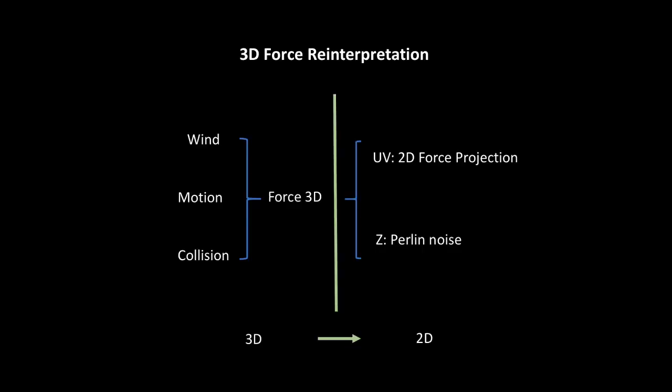We also have a system to reinterpret any 3D forces, whether coming from wind, motion, or collision, and turn it into a 2D force in the UV space by a combination of force projection methods and Perlin noise for the missing dimension.